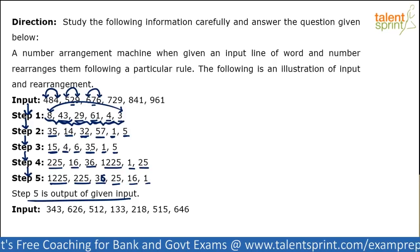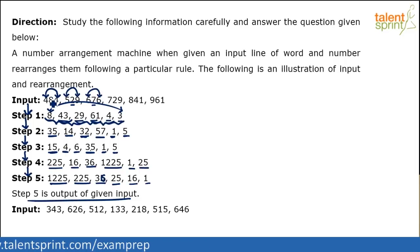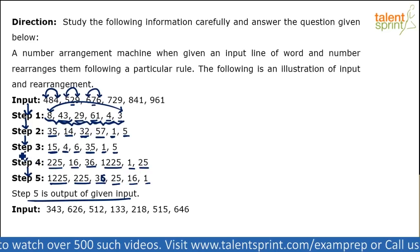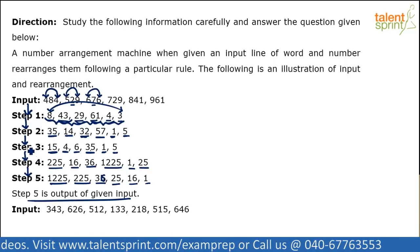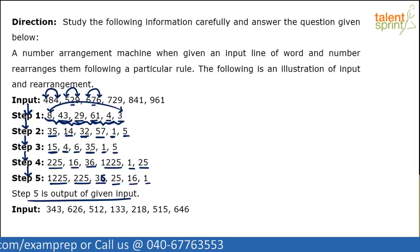So there are 5 steps, each with its own logic. In step 1, take the product of the units and hundreds place and subtract the tens place. In step 2, take the difference of consecutive numbers (cyclically). In step 3, take the product of the two digits. In step 4, take the squares of the given numbers. In step 5, arrange the numbers in descending order.